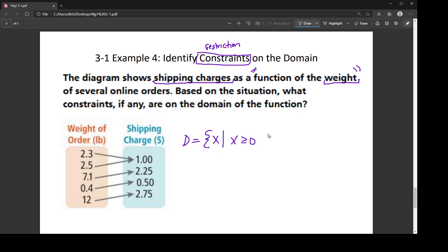Then I ask myself, can I have a portion of a pound or whatever? And yes, I can. So that is the only constraint on my situation. The constraint is that weight must be positive.